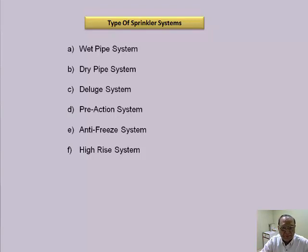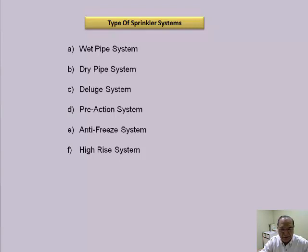Generally, the sprinkler systems are: wet pipe system, dry pipe systems, deluge systems, pre-action systems, anti-freeze systems, and high-rise building systems.